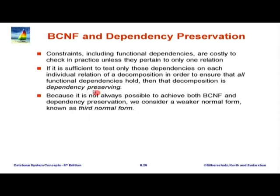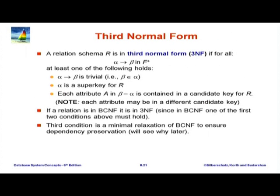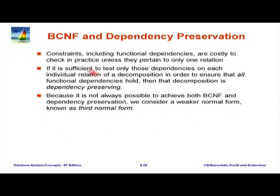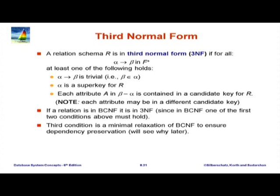We will see examples of this coming up. The other result which came up is that there are certain relations for which there is no way to ensure a dependency-preserving decomposition which is also in BCNF. As a result, people came up with another normal form called third normal form, which is slightly weaker. The goal at this point was to motivate why people came up with yet another normal form.